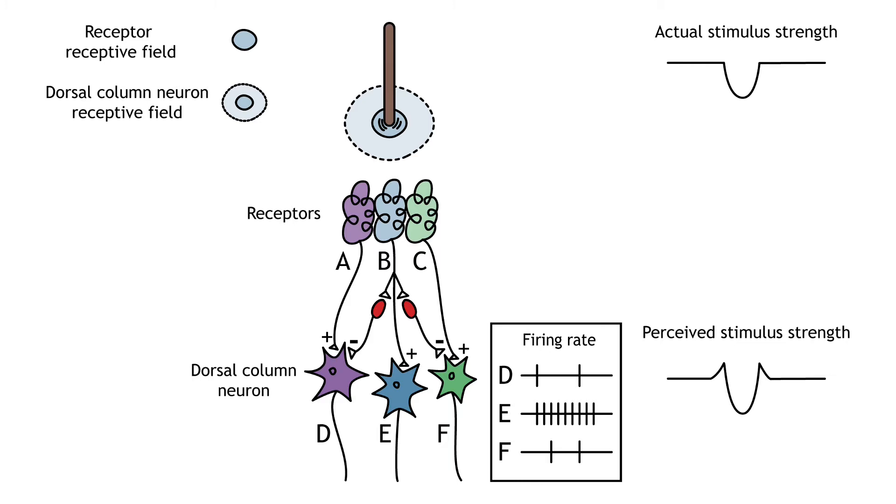The point of a blunt probe pressing on the receptive field of cell B will cause an increase in the firing rate of cell E, but will also cause a decrease in the firing rate of cells D and F. This increases the perceived difference between the point and the area next to the point that is not being stimulated.